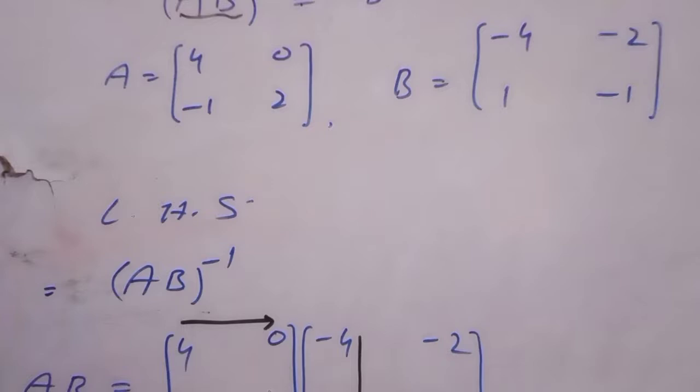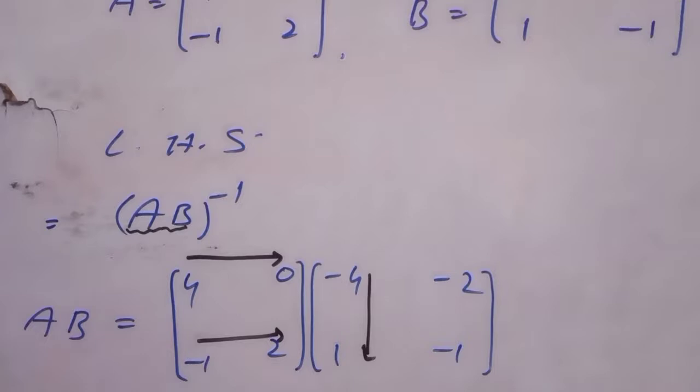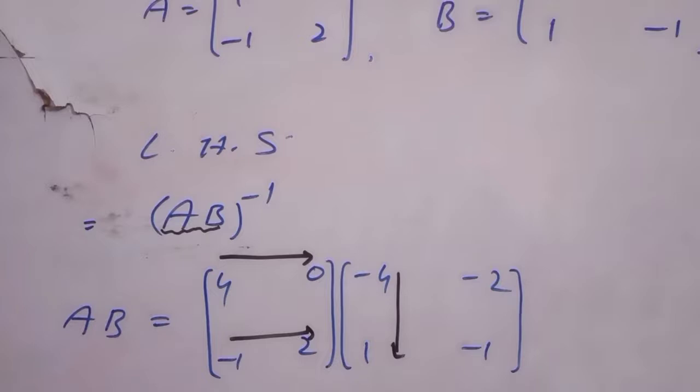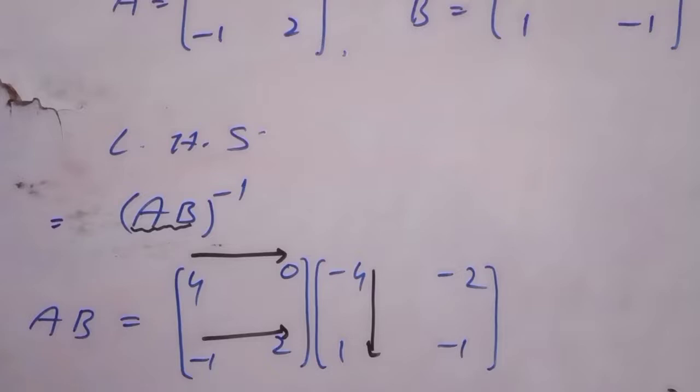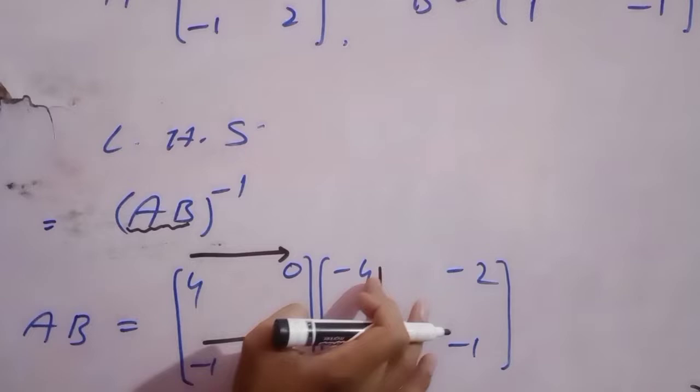Left hand side को pick किया: AB whole inverse. सबसे पहले हम AB को multiply करेंगे, A को B के साथ। Matrix multiplication का method पहले revise कर चुका हूँ, उसी method को use करते हुए हम A और B को multiply करते हैं।